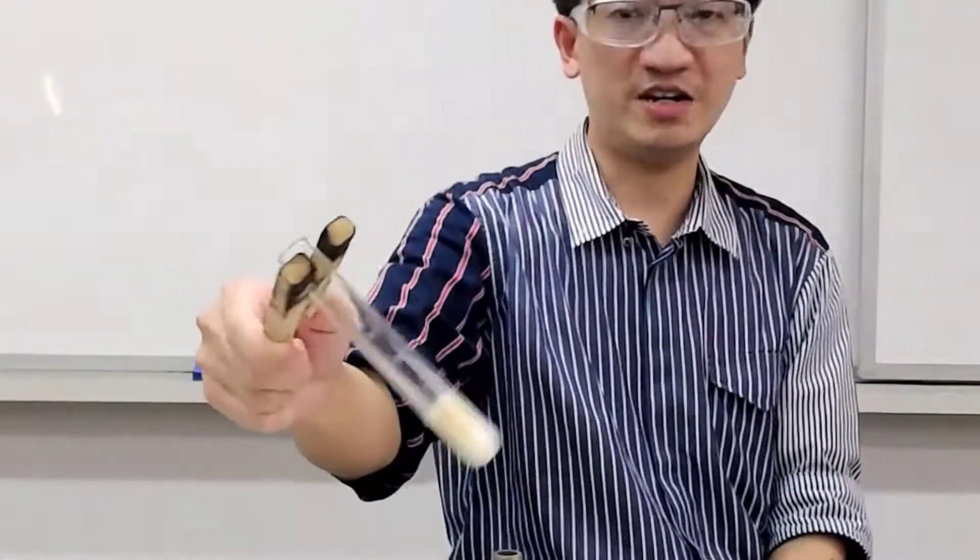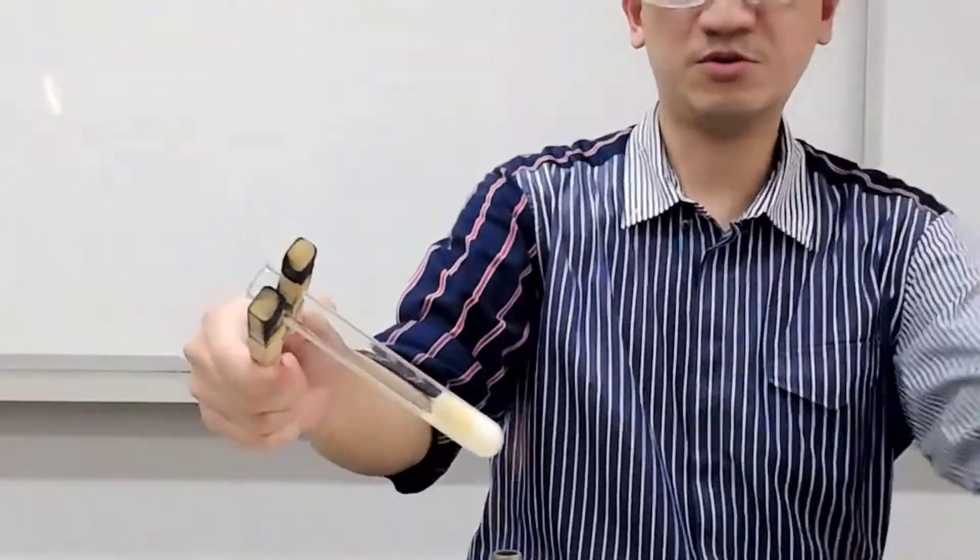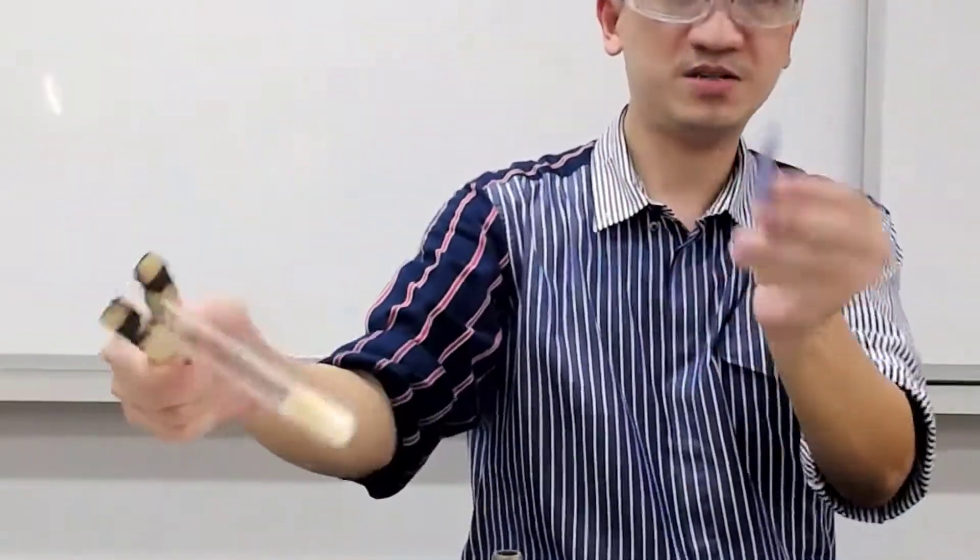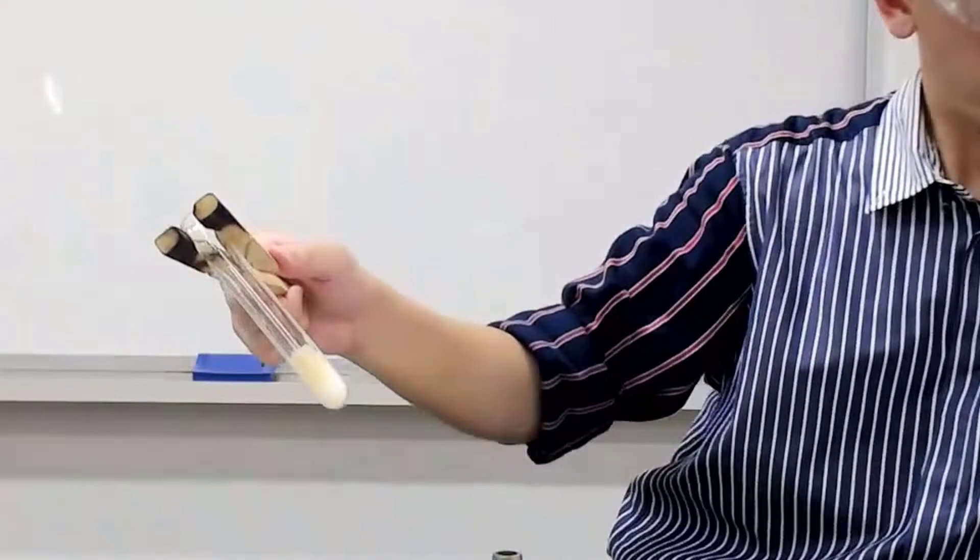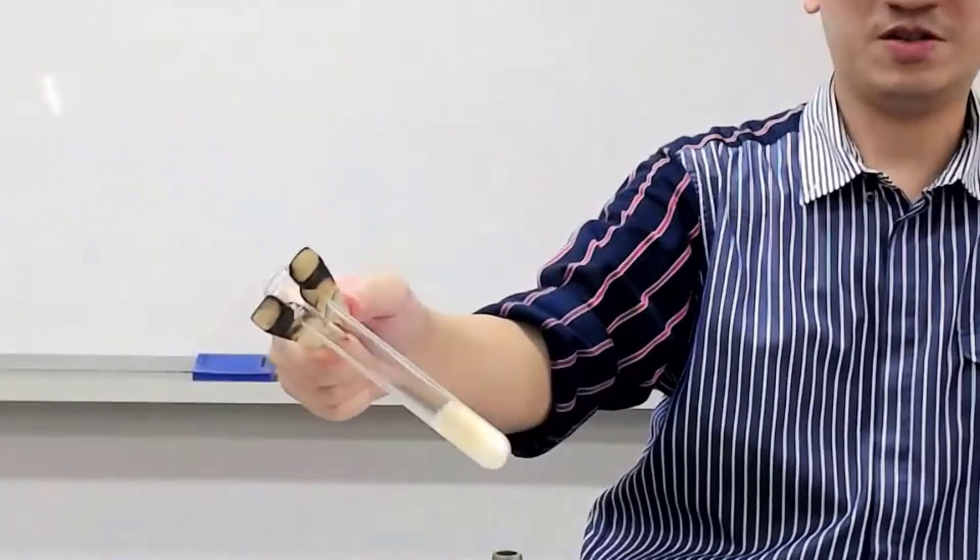Right now I'm going to test for NO2. I'm going to use a blue litmus paper. We're going to moisten it with a little bit of water for you to observe.